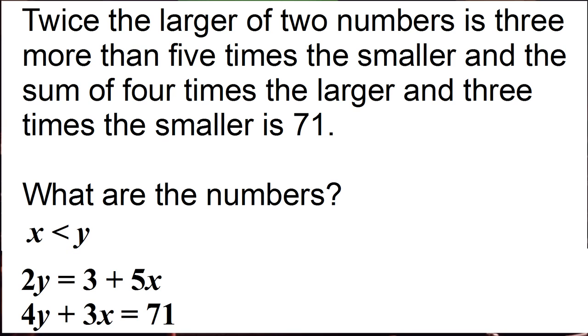The other equation is four times the larger, four y, and three times the smaller, three x, is equal to seventy-one. We now have a series of two equations and two variables. We can solve this by eliminating one of the variables and then solving for the other.